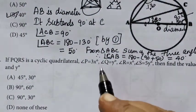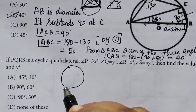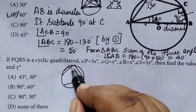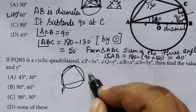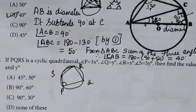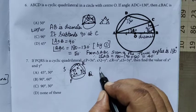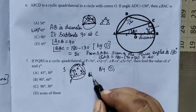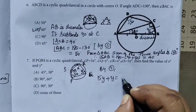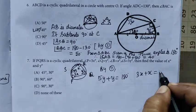PQRS is a cyclic quadrilateral. We know the property: sum of opposite angles is 180 degrees. From the figure, the P value is 3X. Find the value of X. Writing the property: 5Y plus Y equals 180 degrees, and 3X plus X equals 180 degrees.